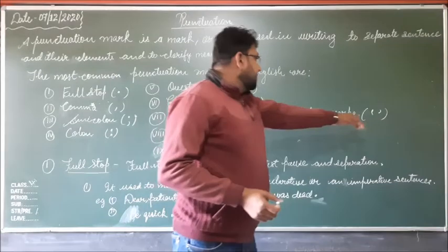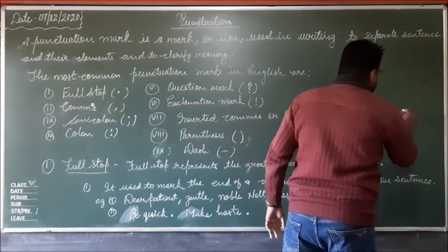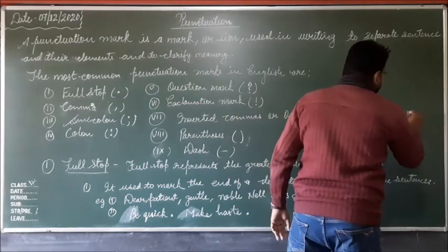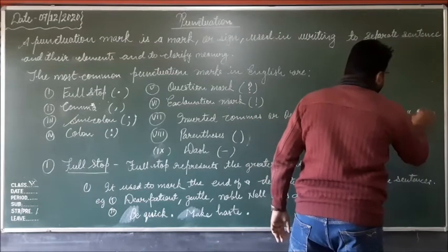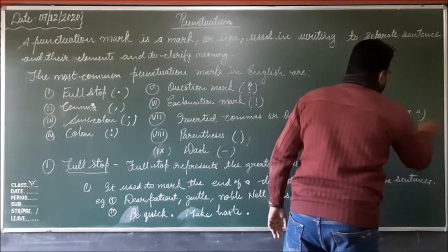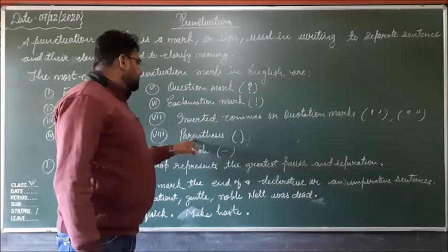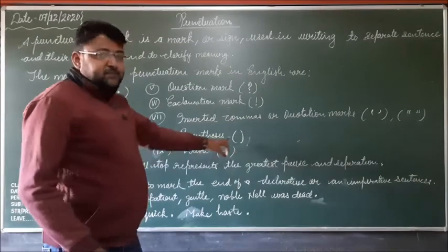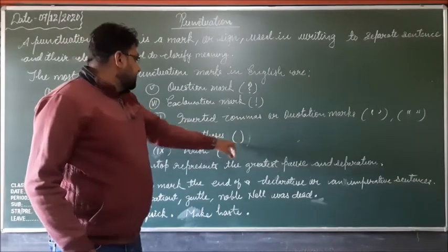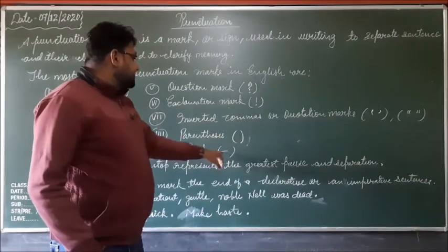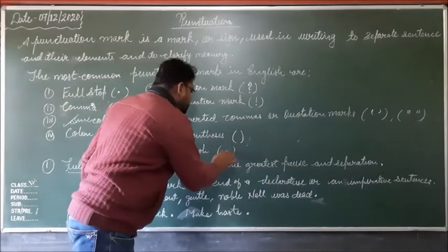Here is the single quotation mark and this is the double quotation mark. These are the quotation marks. Then parenthesis, means bracket, and dash — this is dash.